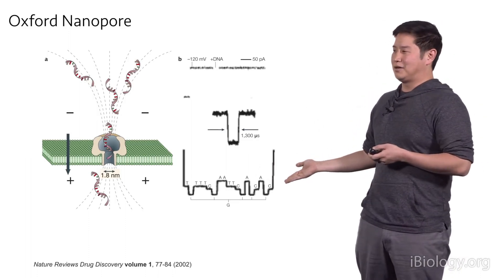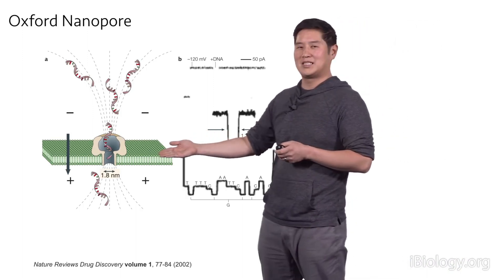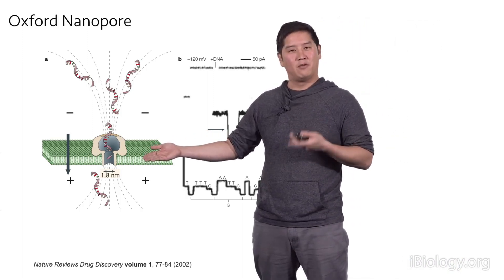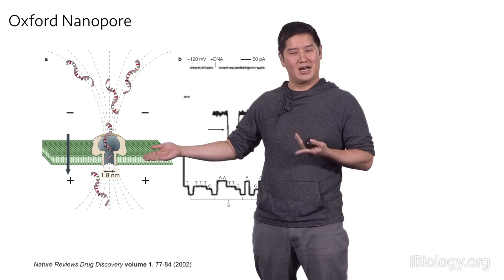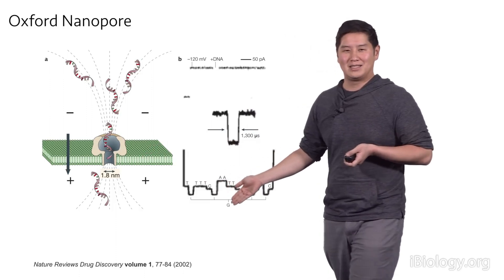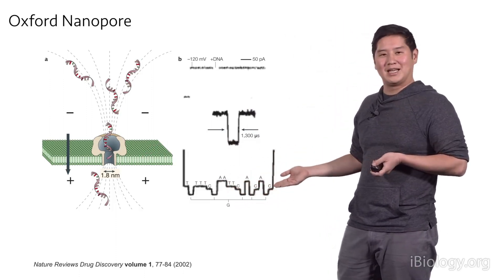In reality, the traces don't look this clean because in the pore, they're actually up to six bases at a time present. And with six bases times four different possible bases for your As, Cs, Gs, and Ts, this generates up to 4,000 different possible states. And so it was really a technical tour de force to get this to work.